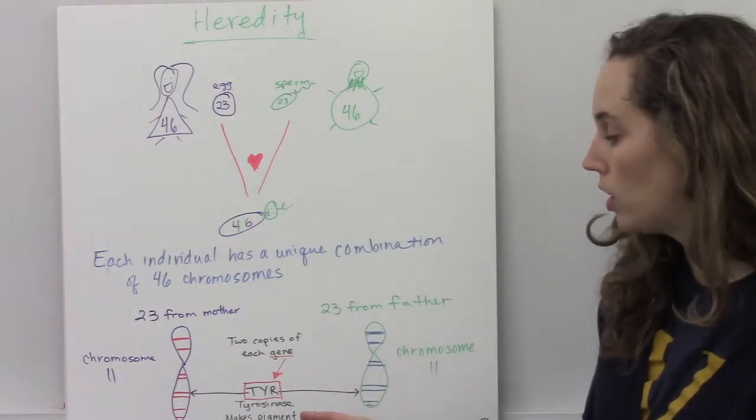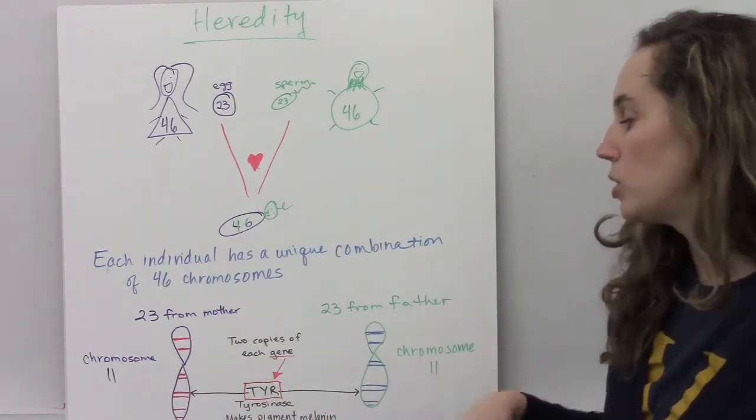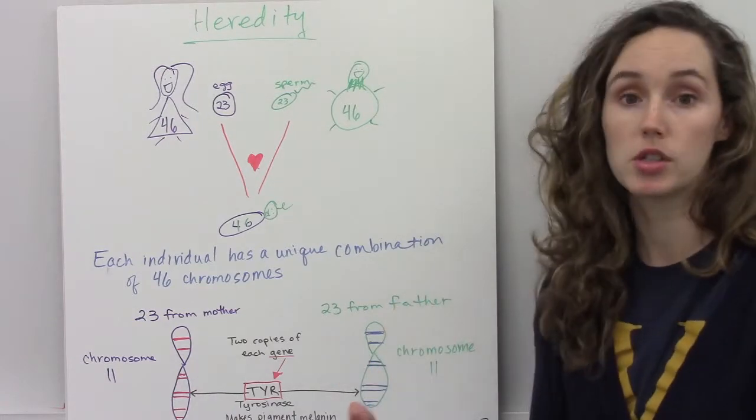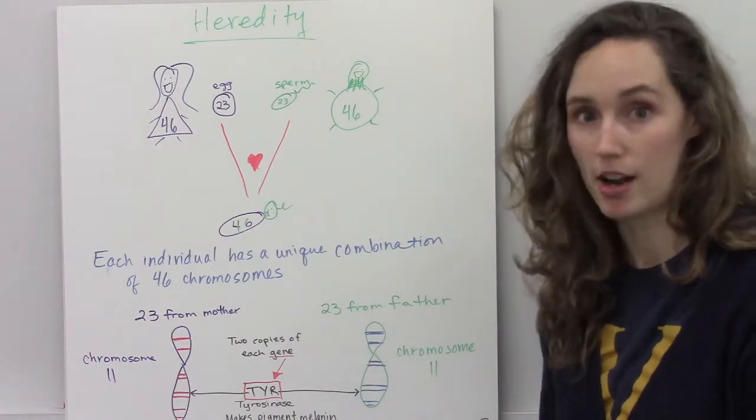Every chromosome has a gene that corresponds, and here's an example of the TYR gene right here, which codes for the production of a protein called tyrosinase, which is important in the production of melanin, which is the brown pigment in your skin, hair, and eyes.